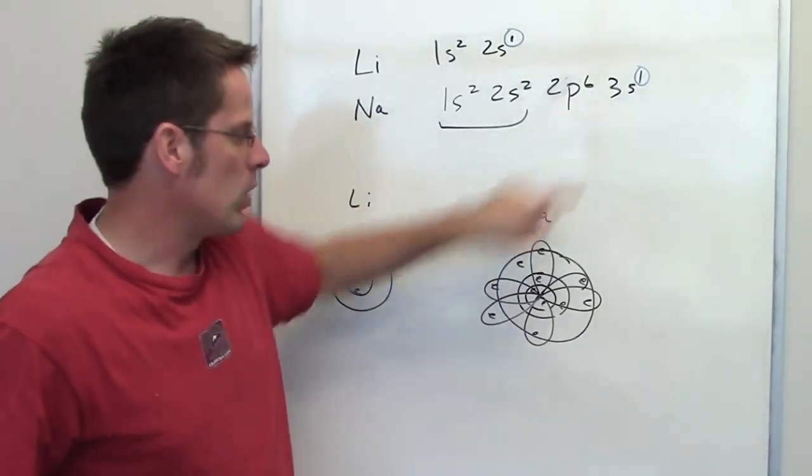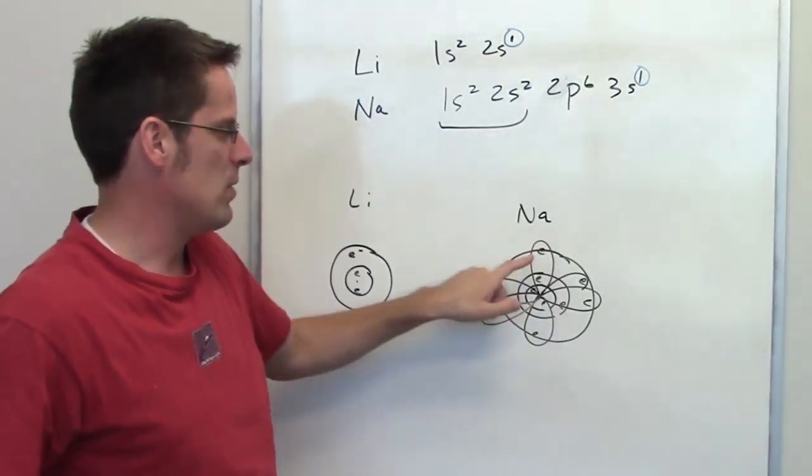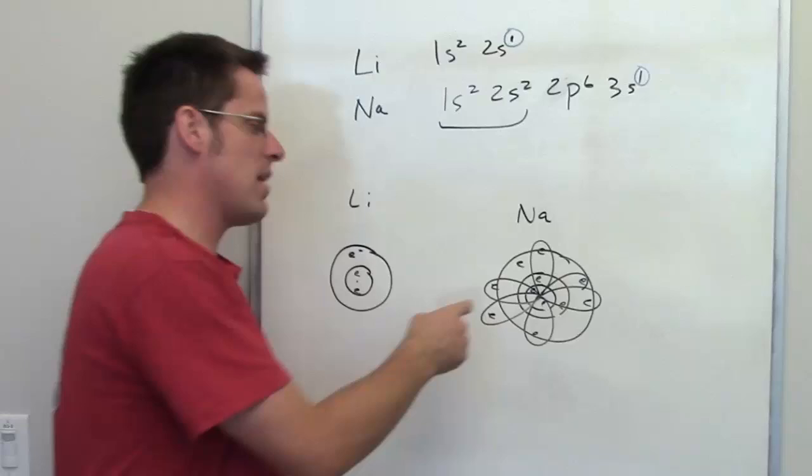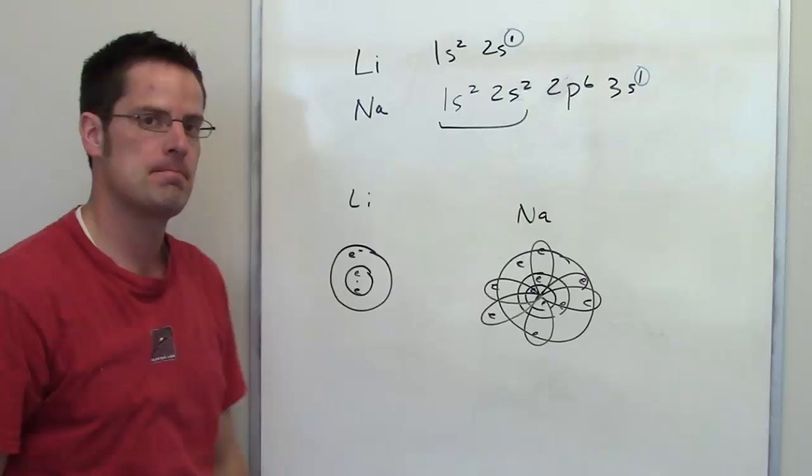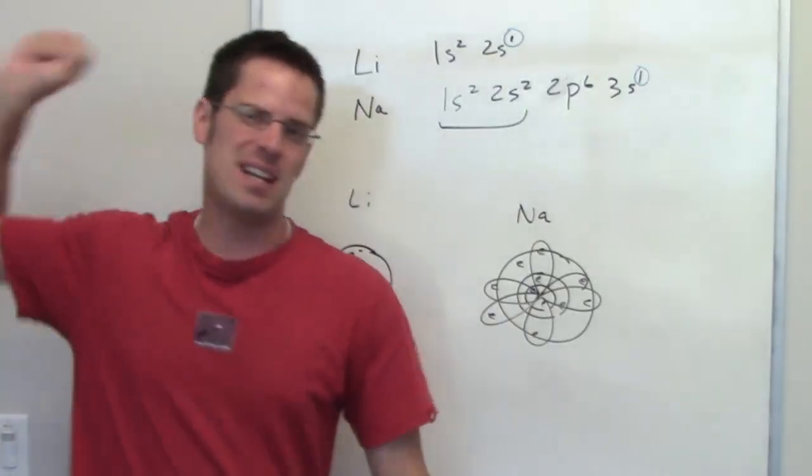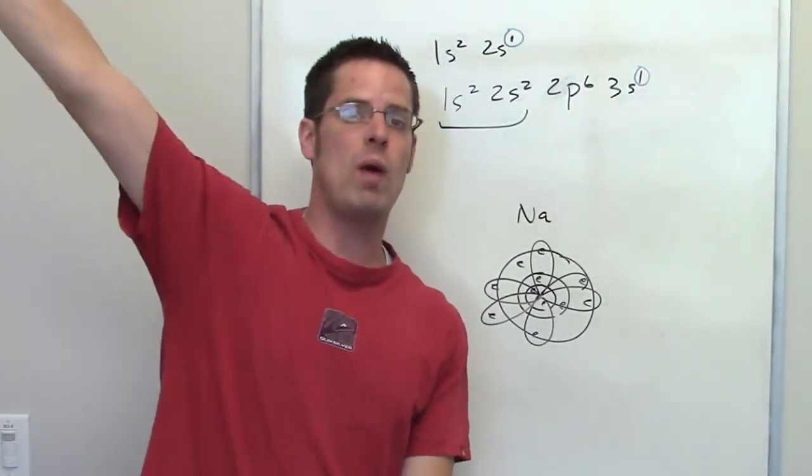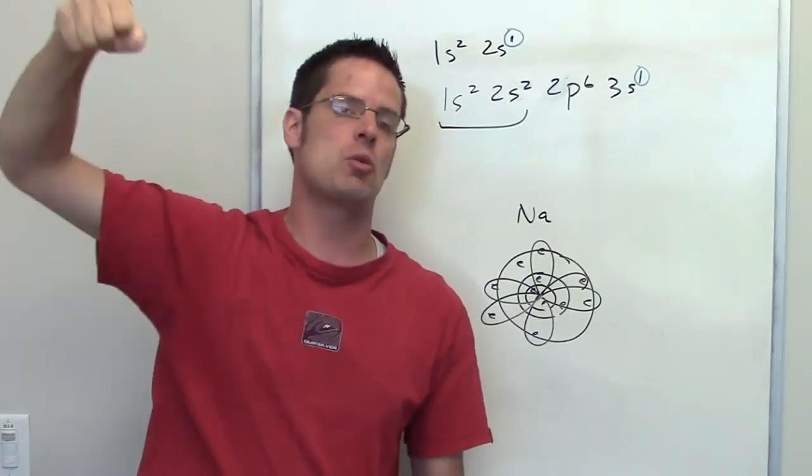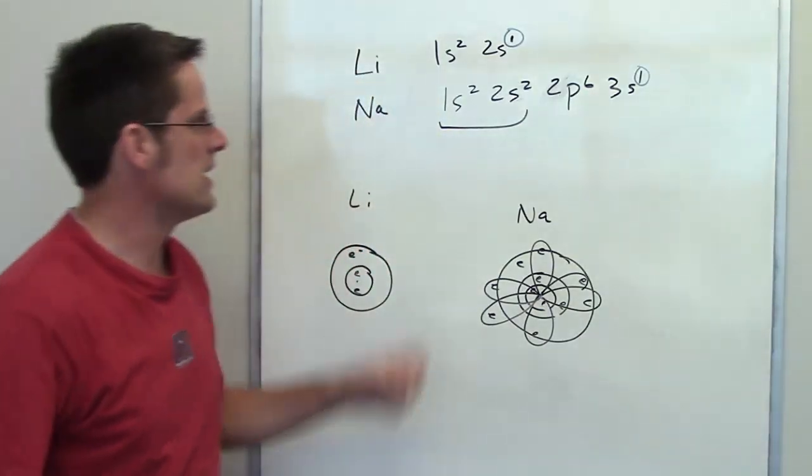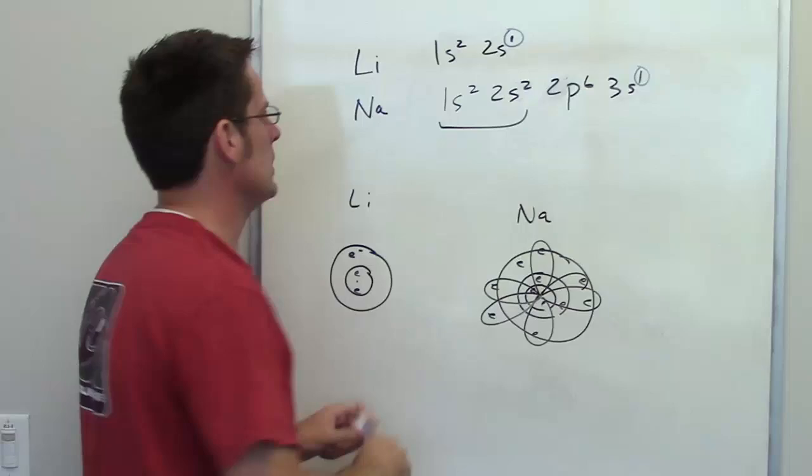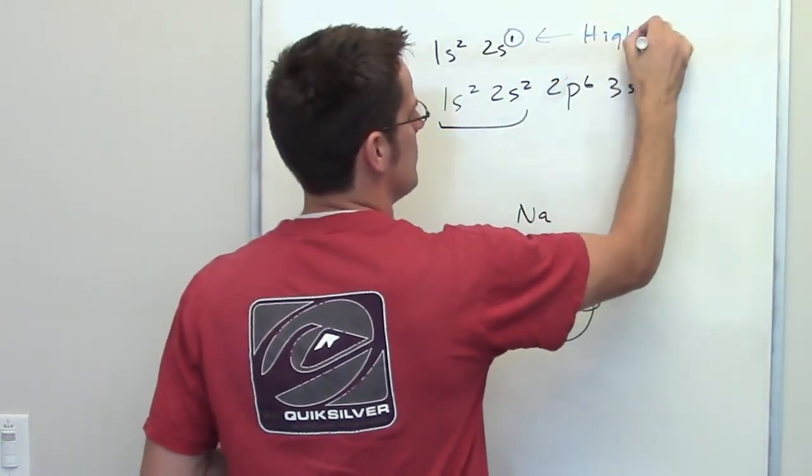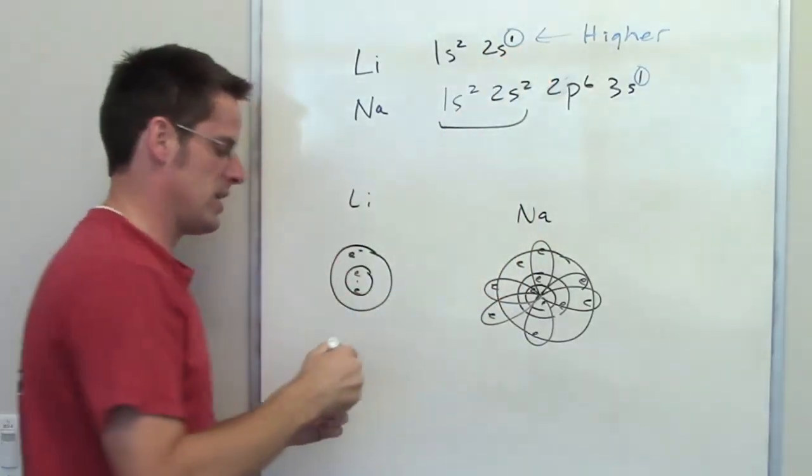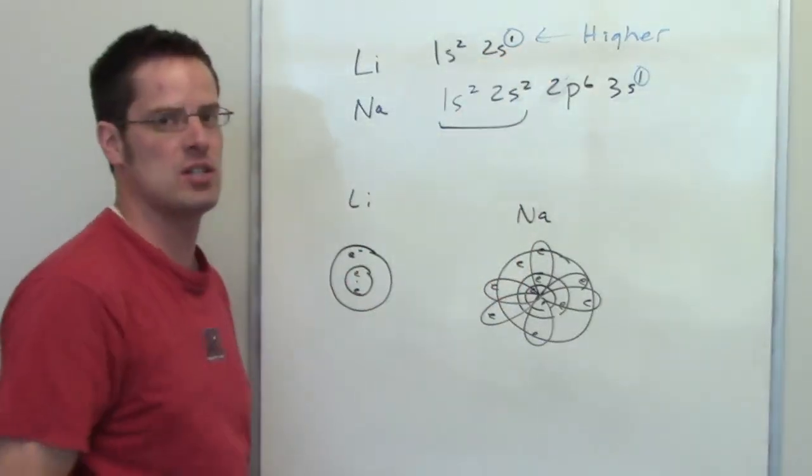Sodium's electron out in the 3s orbital is much further away from the protons in the nucleus than the outermost electron in lithium. What that means is that because that electron is further away from those protons, it's easier to remove it than if you're closer. So lithium has a much higher first ionization energy because its single electron that you're going to remove is closer to those protons in the nucleus.